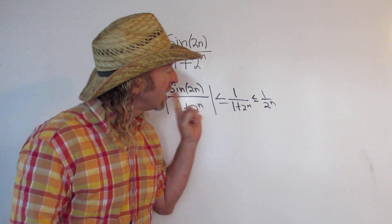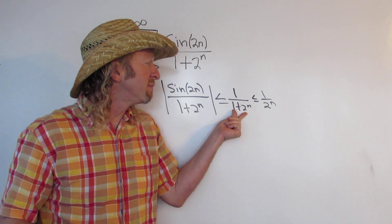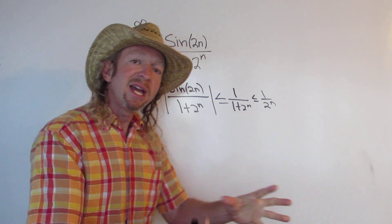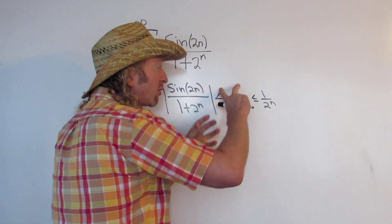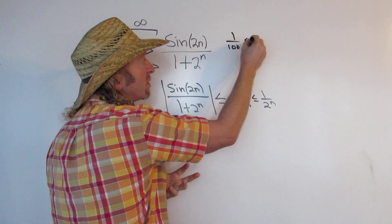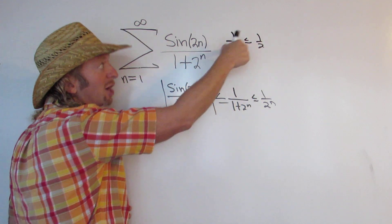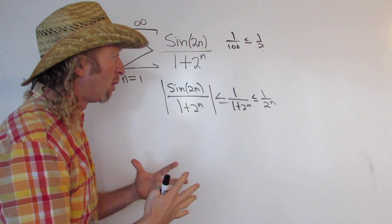You might say, well, why can you do that? It's because this fraction is smaller than this fraction because 1 plus 2 to the n is a bigger number than 2 to the n. So the fraction is smaller. Think about it. If you have 1 over 100, that's less than or equal to 1 over 2 because 100 is bigger than 2. So when you make the number on the bottom big, the fraction becomes small.